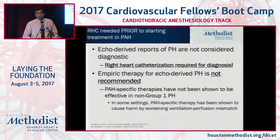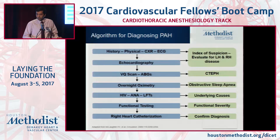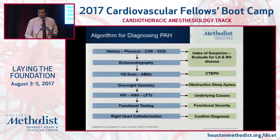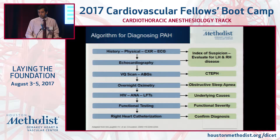Treating these patients based on echo is really not recommended because you don't have an appropriate diagnosis. To classify patients better, you get a VQ scan to look for chronic thromboembolic PH, get all the serologies for HIV and other rheumatologic illnesses, and finally do a right heart catheterization to confirm the diagnosis.